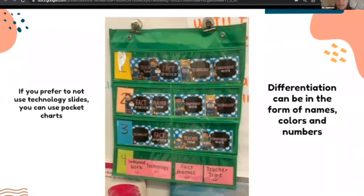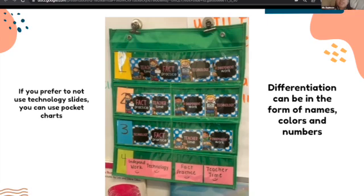Maybe you are not technology savvy, or maybe you need something more concrete. One of your options can be pocket charts — and they don't have to be anything fancy. Differentiation can be in the form of names, colors, and numbers, or as simple as a pocket chart. The purpose is to make sure kids understand their progression and where they need to go, what their choices are, and what the formation looks like. By doing this continuously, the kids will get better and better at understanding what the purpose of their work is.